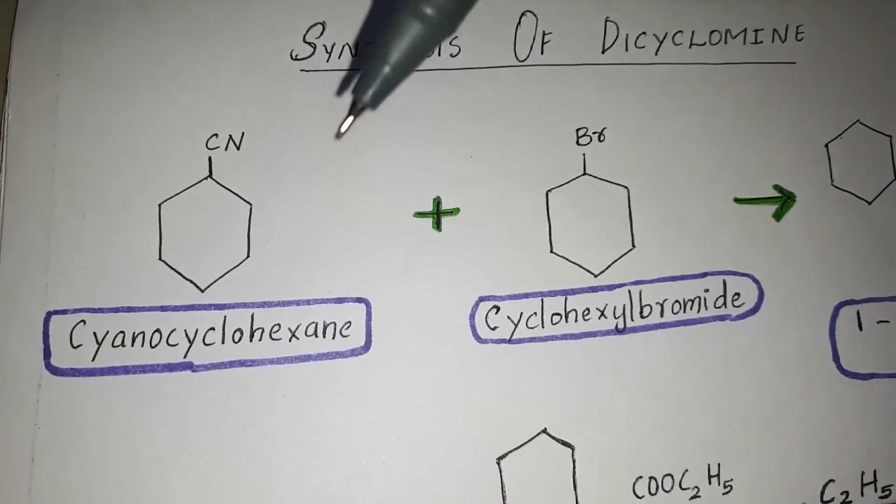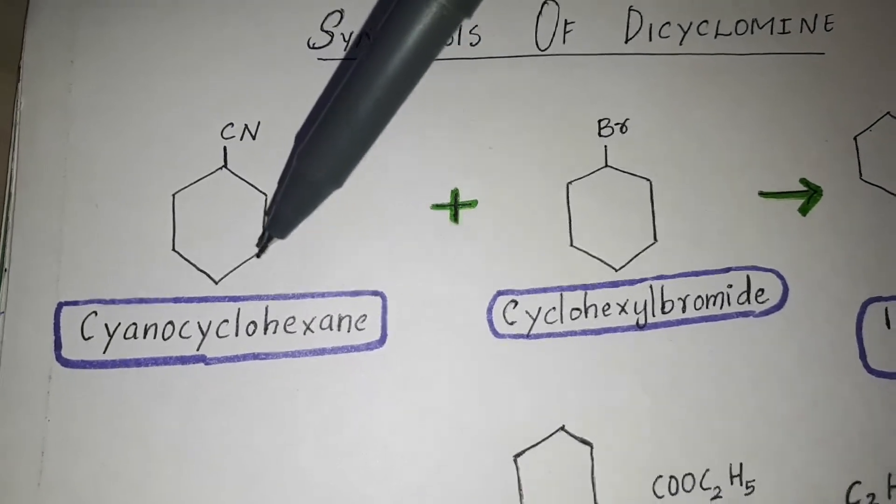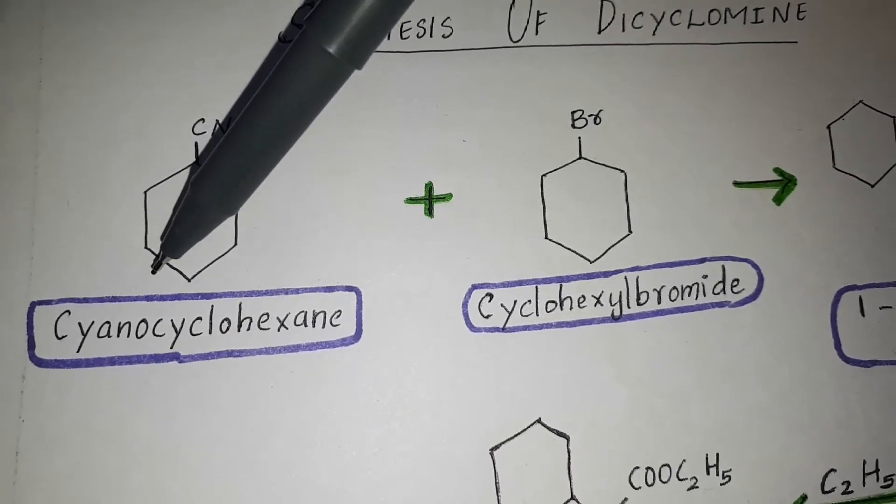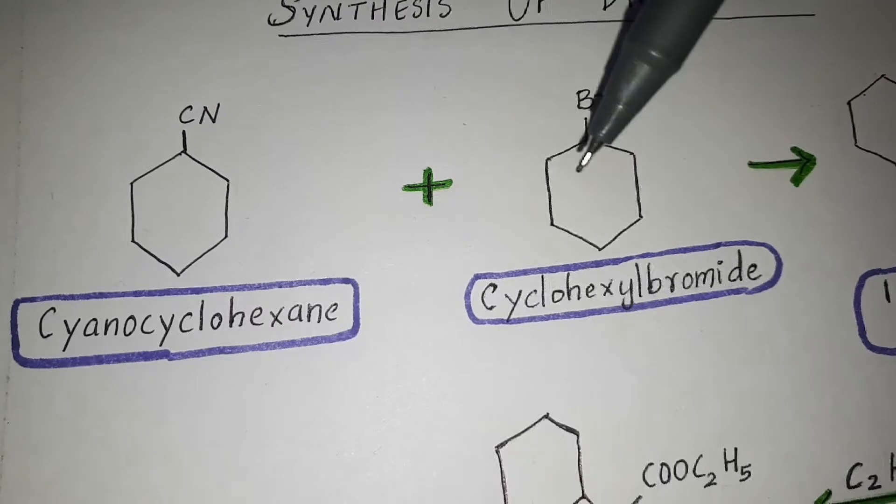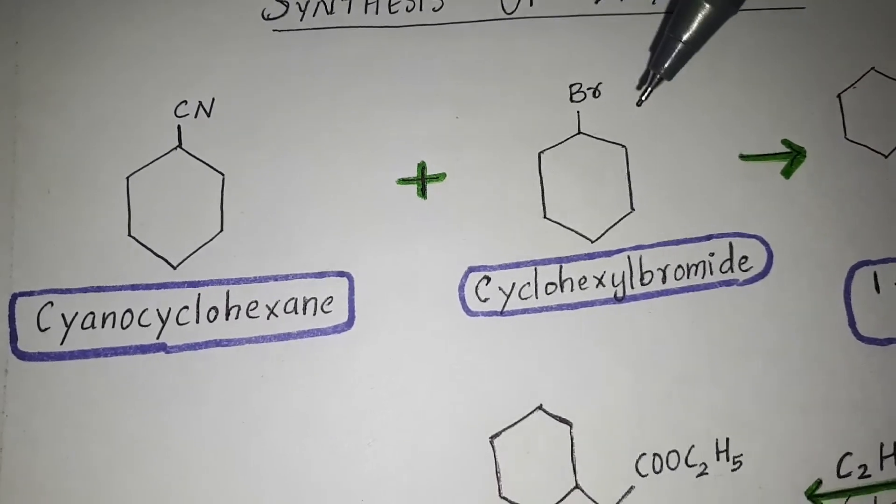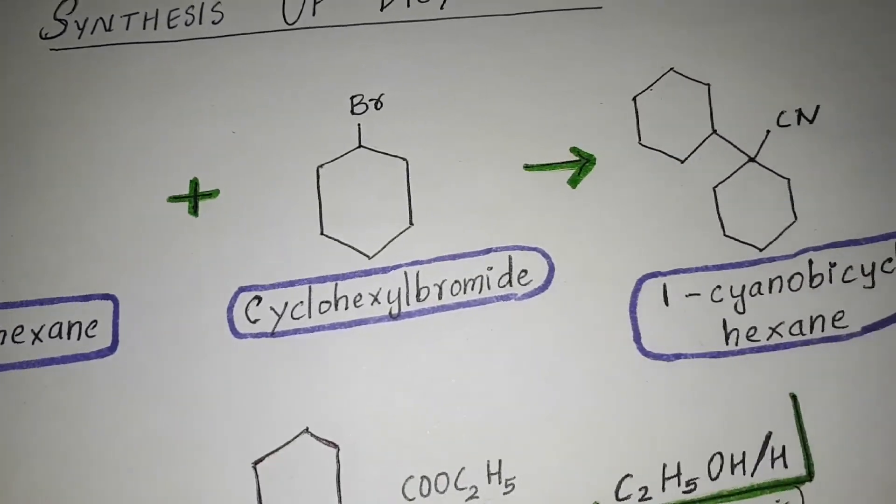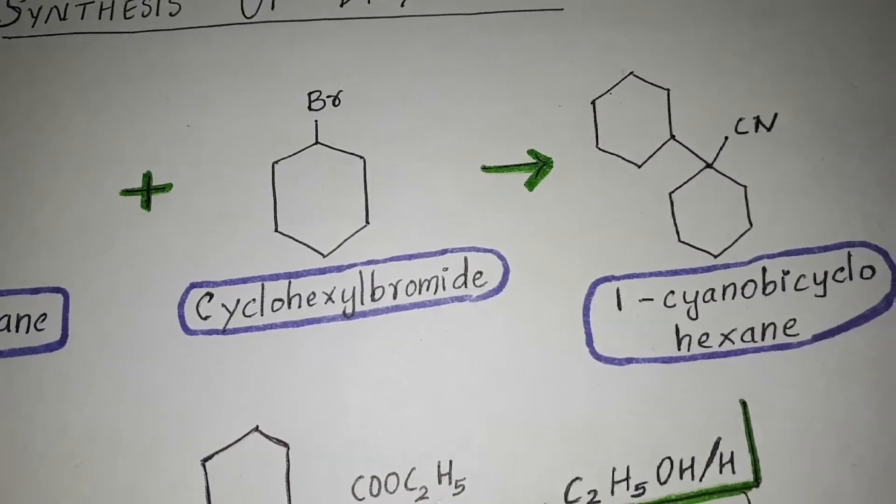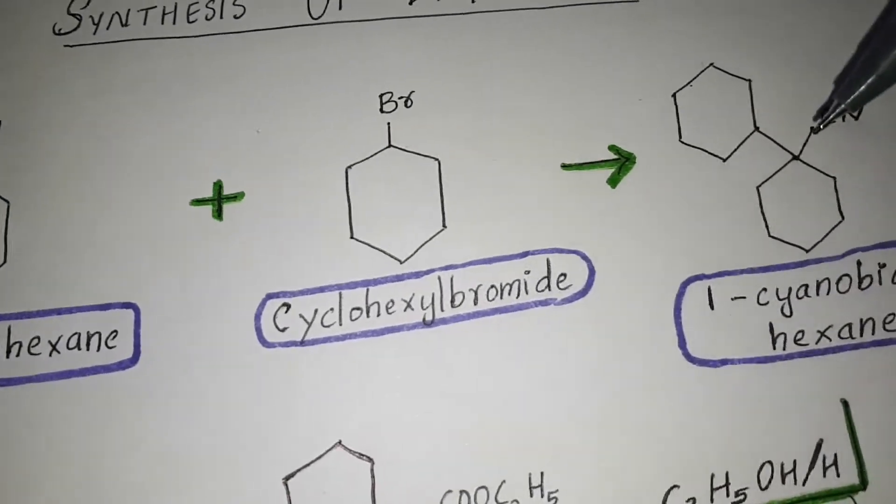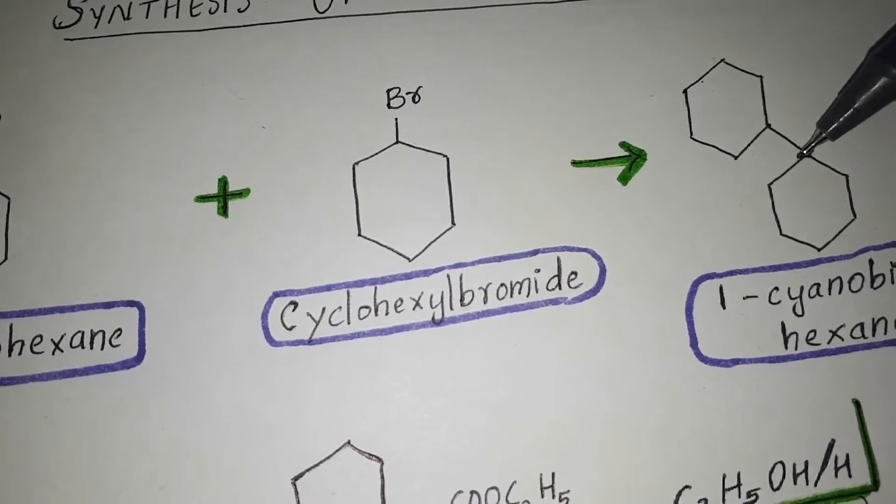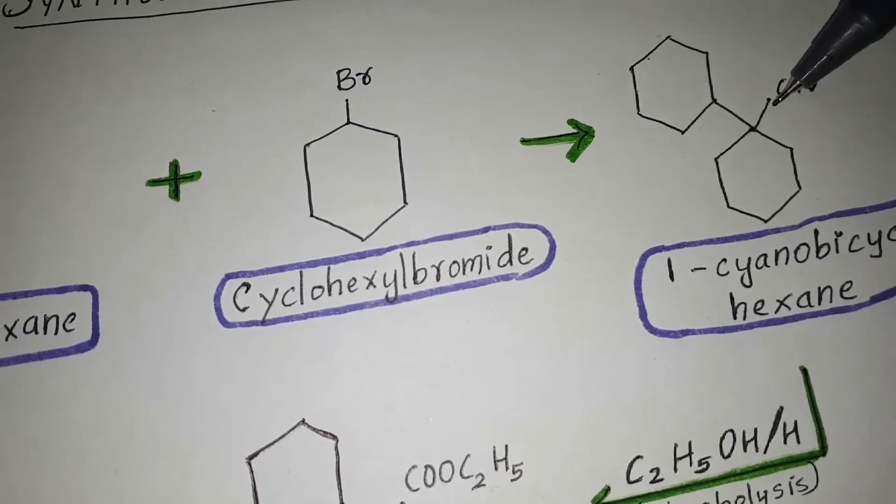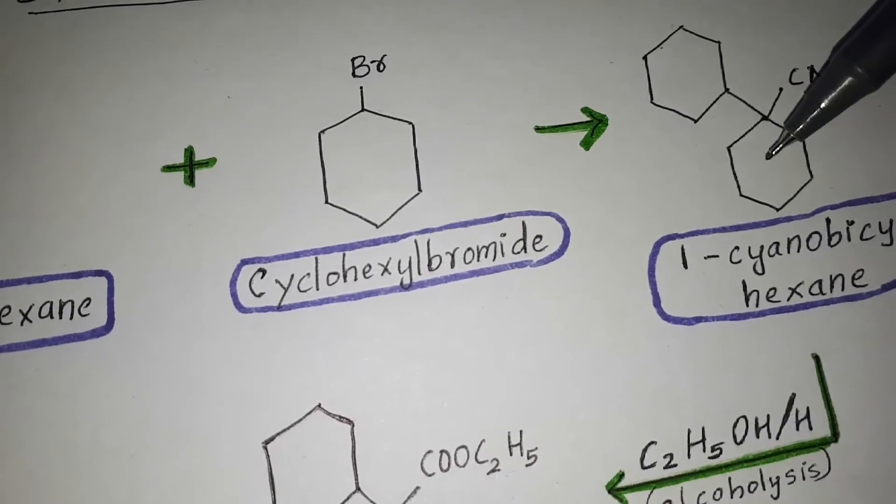First we have cyanocyclohexane, which combines with cyclohexyl bromide to form one-cyanobicyclohexane. These two cyclic rings combine with the cyano group, minus Br, to form one-cyanobicyclohexane - two cyclohexane rings.